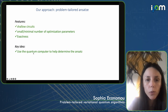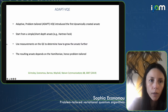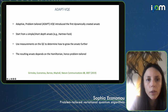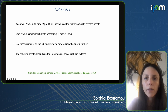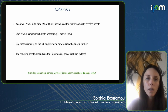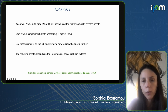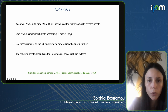The idea we're going to explore is to use the quantum computer to help us create the ansatz. The algorithm we have introduced that does this is called ADAPT-VQE — ADAPT stands for Adaptive Problem-Tailored VQE. This is a dynamically created ansatz: we run circuits on the quantum computer, make measurements, and as we do that we grow the ansatz. We start from something simple like the Hartree-Fock mean field solution and then use measurements to grow it further.